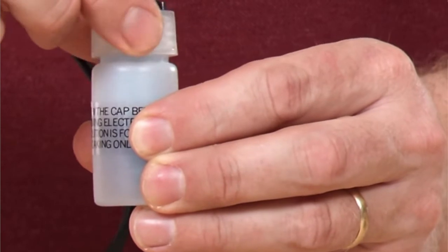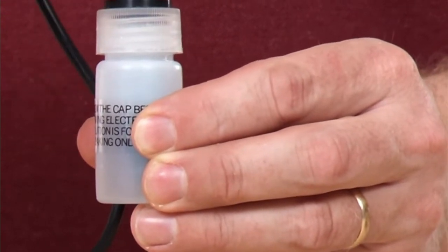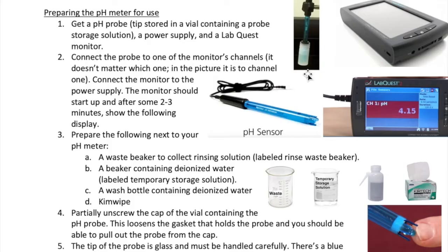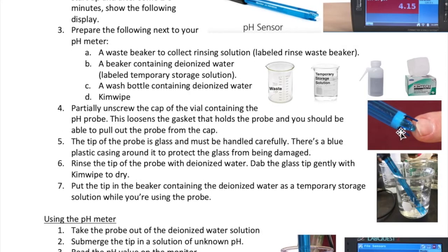Partially unscrew the vial where the pH probe tip is stored. Pull the pH probe out and screw the cap back onto the vial. The tip of the probe is made out of clear glass, which is protected by the blue plastic casing. The glass can break, so you need to handle it carefully.